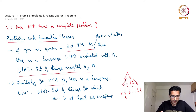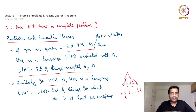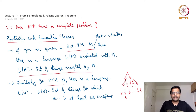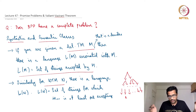To begin, let me ask this question: does BPP have a complete problem? The complexity class BPP. And this leads to the definition of two classes called syntactic and semantic classes.